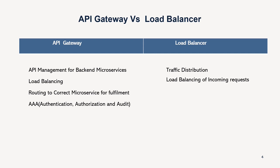Authentication, authorization, and auditing are capabilities provided by the API gateway but are not present in — or required by — the load balancer. API gateway can authenticate, authorize, and audit requests coming to it.